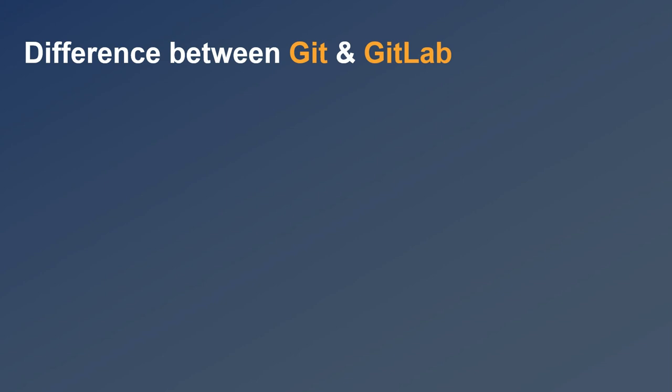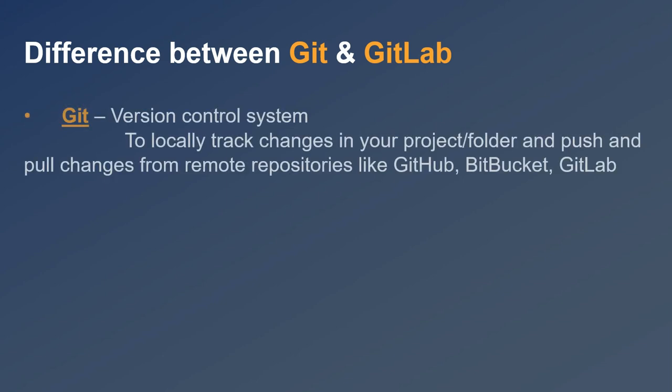First of all, let's see what is the difference between Git and GitLab. If I talk about Git, it is a version control system and it is used to locally track our changes. So this is a version control system to locally track changes in your project or folder.